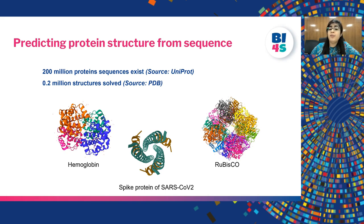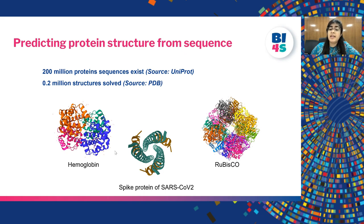The simplest answer is improvement in health and disease conditions. For example, once the structure of hemoglobin became known, it deepened understanding of blood disorders such as sickle cell anemia. Similarly, the structure of the spike protein of SARS-CoV-2 has played a vital role in designing effective vaccines against the virus. Also, the structure of rubisco has contributed immensely to deepening our understanding of photosynthesis in plants.